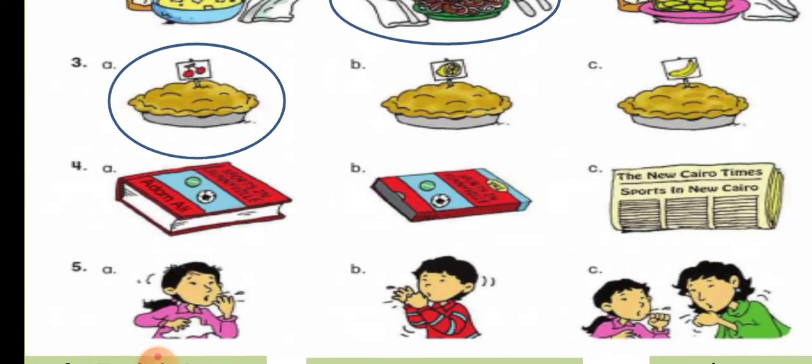Number four. Hello. May I speak to Mona, please? I'm sorry, she isn't in right now. Can you take a message? Sure. Who is calling? This is Mrs. Dua at the New Cairo Library. We have a video about sports in Cairo now. Is that a book? No, it's a video. Okay, I will give her the message. The answer is B.